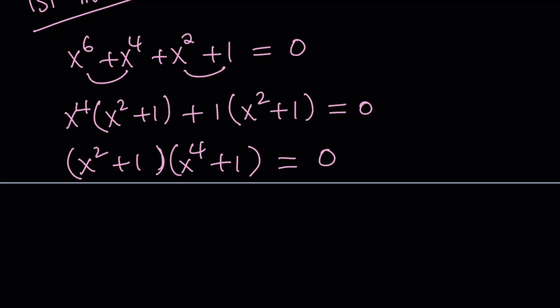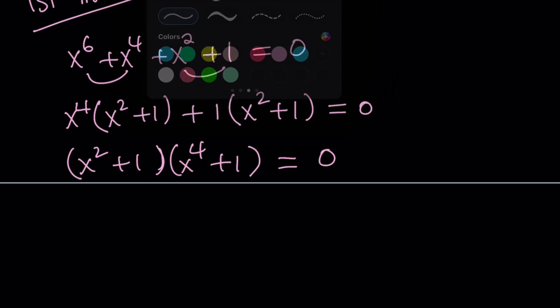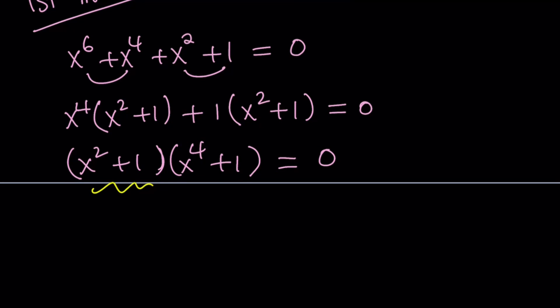By setting each factor equal to 0. What about the first one? x^2 + 1 = 0. So from here we get x^2 = -1. And then we're going to be thinking about the square roots of -1.